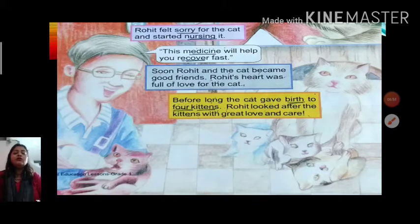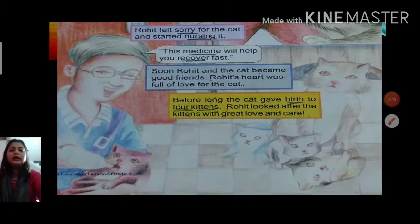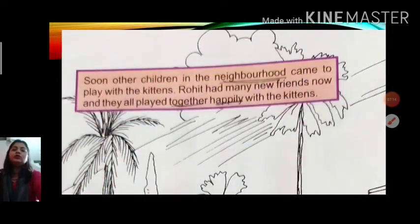Now Rohit and the cat became good friends. Rohit's heart was full of love for the cat. Before long, the cat gave birth to four kittens. And Rohit looked after the kittens with great love and care. Soon other children in the neighborhood came to play with the kittens and Rohit had many new friends. They all played together happily with the kittens.